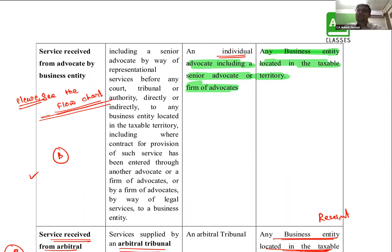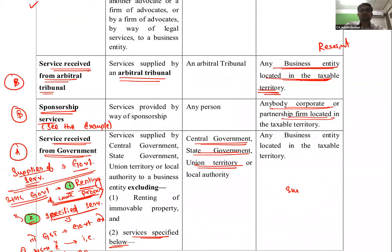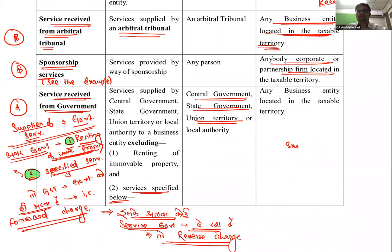Example: Reliance या AD Classes को किसी advocate ने service दी — हमारा turnover ज़्यादा है, तो हम recipient of service हैं और हमें GST भरना पड़ेगा। Advocate को कभी भी GST registration लेने की ज़रूरत नहीं है। जो recipient of service रहेगा, उसे GST भरना पड़ेगा, provided वो business entity होनी चाहिए। Other than business entity की lawyer service GST में taxable नहीं है।